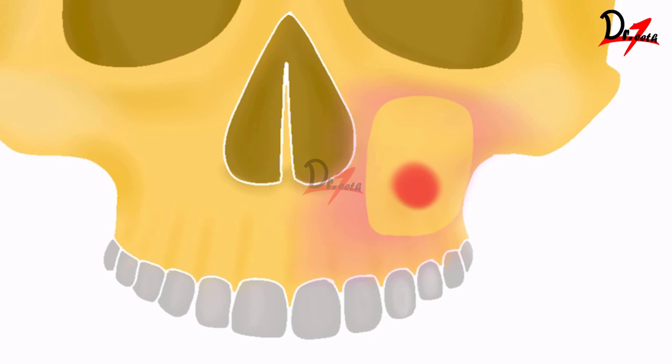After all this, we can pack the cavity with iodoform ribbon gauze. To close the case, you can perform a nasal antrostomy or give a small incision on the buccal vestibule. After this, we will suture it with a 3-0 silk suture.